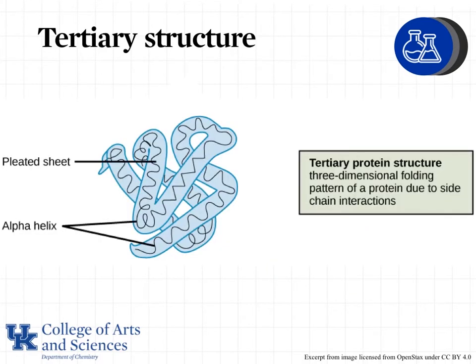Next is our tertiary structure, and this is where the polypeptide begins to fold in on itself, and there are interactions between the side chains that hold it into that structure. Think about what it would look like if you took a big long piece of yarn and wadded it all up. You would start to see that the pieces fold in on themselves and kind of become an entangled mess. And that's what the proteins are doing, but they're doing it very intentionally because the shape that they form gives that protein its function.